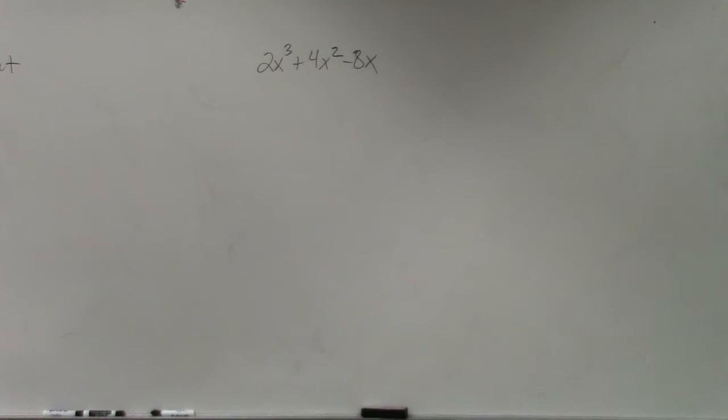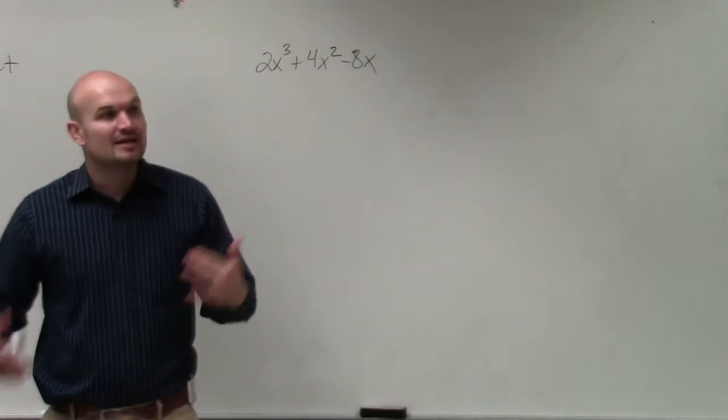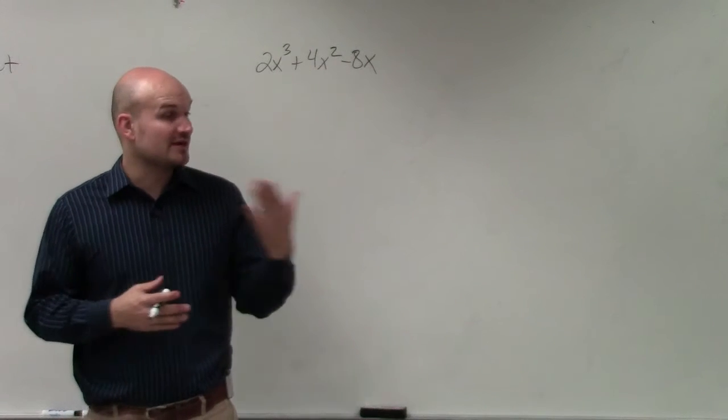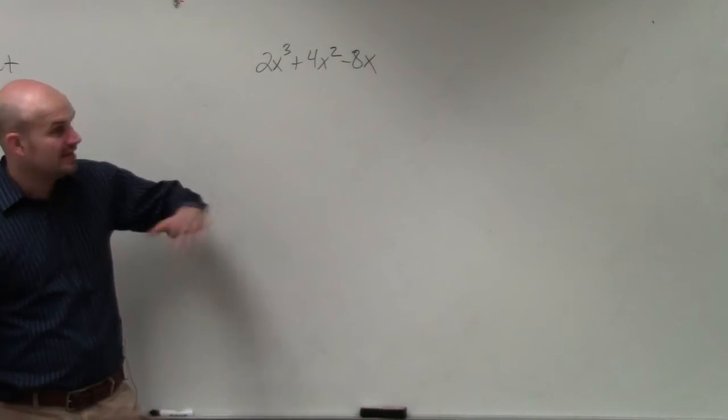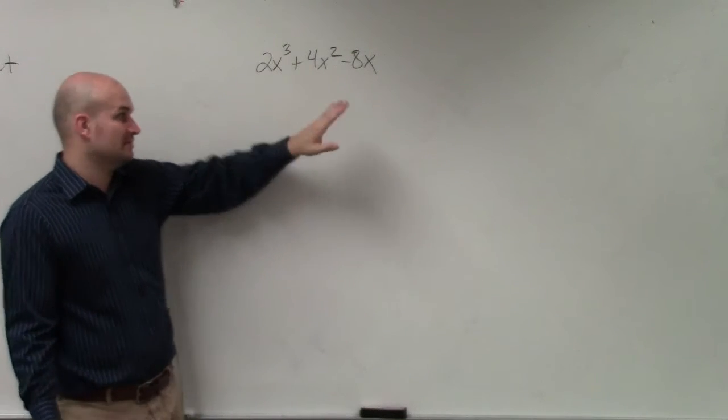So in this example, when we're looking at this one, basically the one thing you want to remember when you're being asked to factor is to always see if you can factor out the greatest common factor first. Now the greatest common factor can contain a number, it can be a variable, or it could be a number and the product of a number of variables.